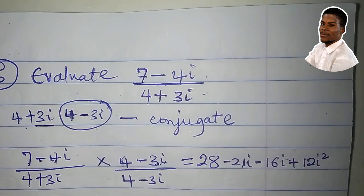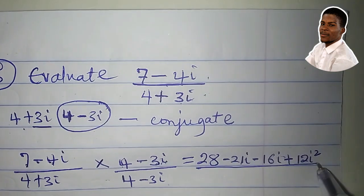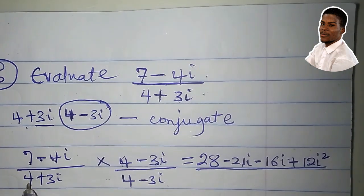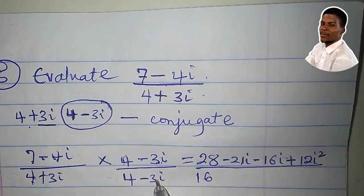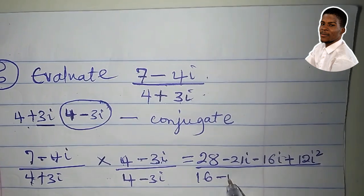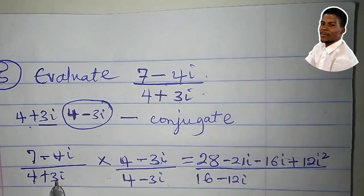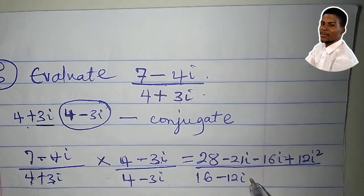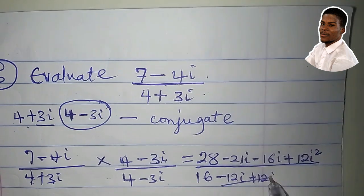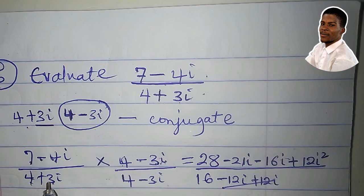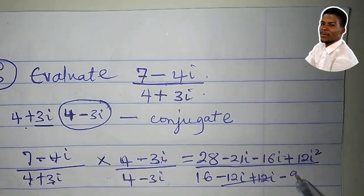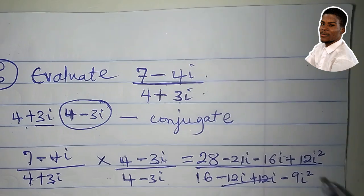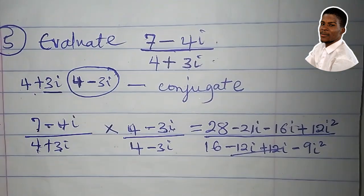Divided by 4 times 4, 16. 4 times minus 3i, minus 12i. 3i times 4, plus 12i. Of course, they're going to cancel out. Then, 3i times minus 3i, minus 9i squared. So let's simplify it.